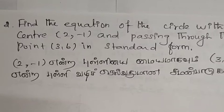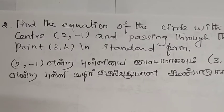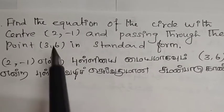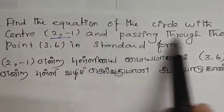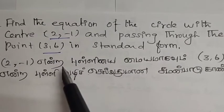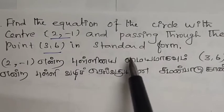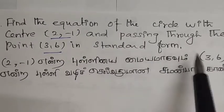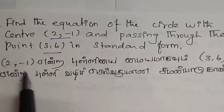Question number 2: Find the equation of the circle with center (2, -1) and passing through the point (3, 6) in standard form.